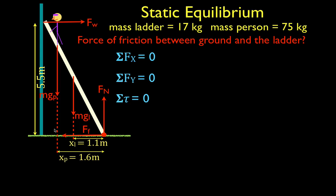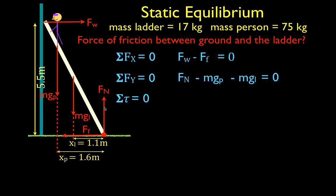Now let's sum up the forces. Forces in the x direction: the force from the wall points in the positive direction, the friction force points in the negative direction, so the force from the wall minus the force of friction equals zero. In the y direction: the normal force minus the force from the person minus the force from the ladder equals zero. For the torques, we're going to choose the base contact point as our axis of rotation. The normal force and the friction force act right at the axis of rotation, so they produce no torque.